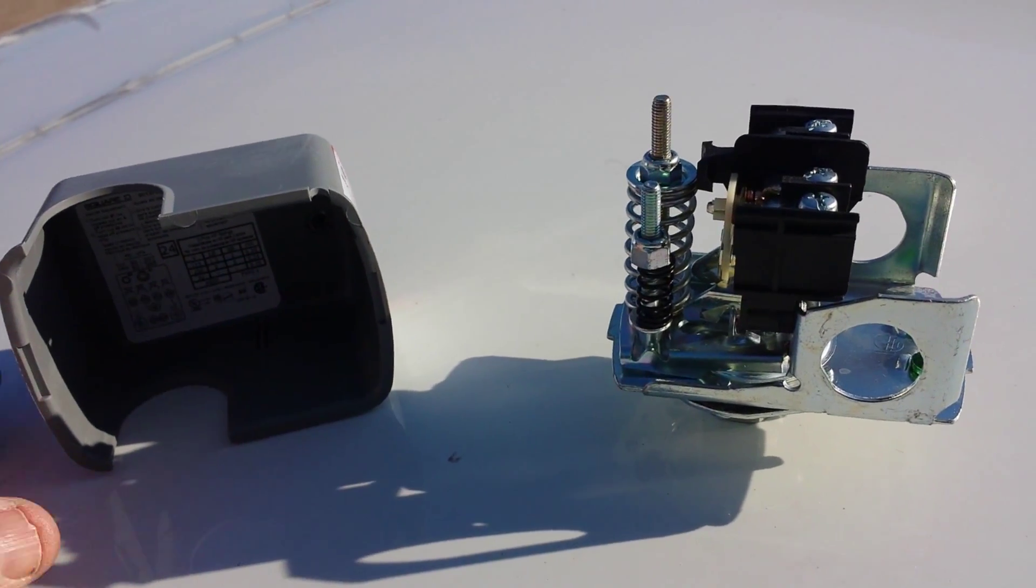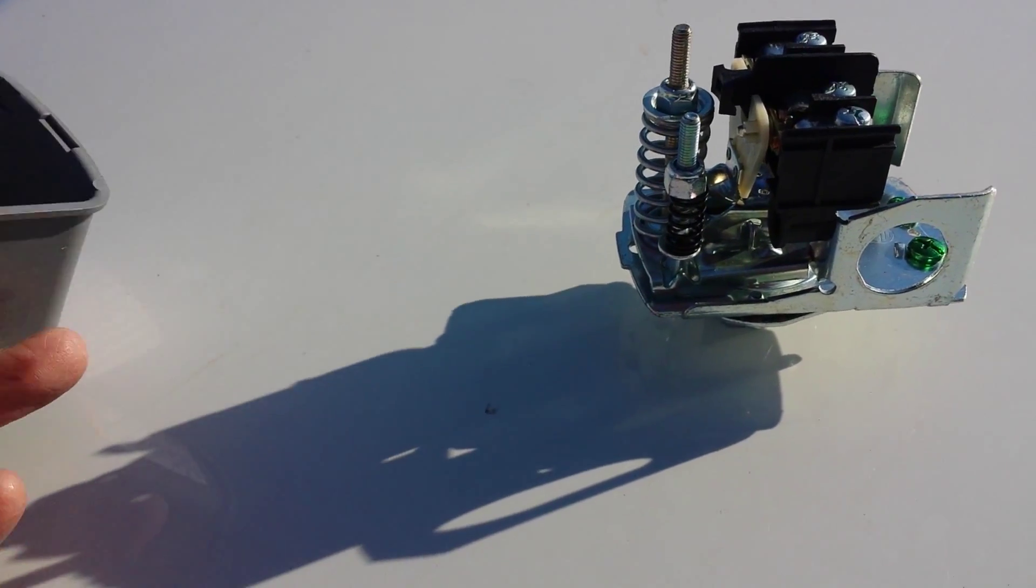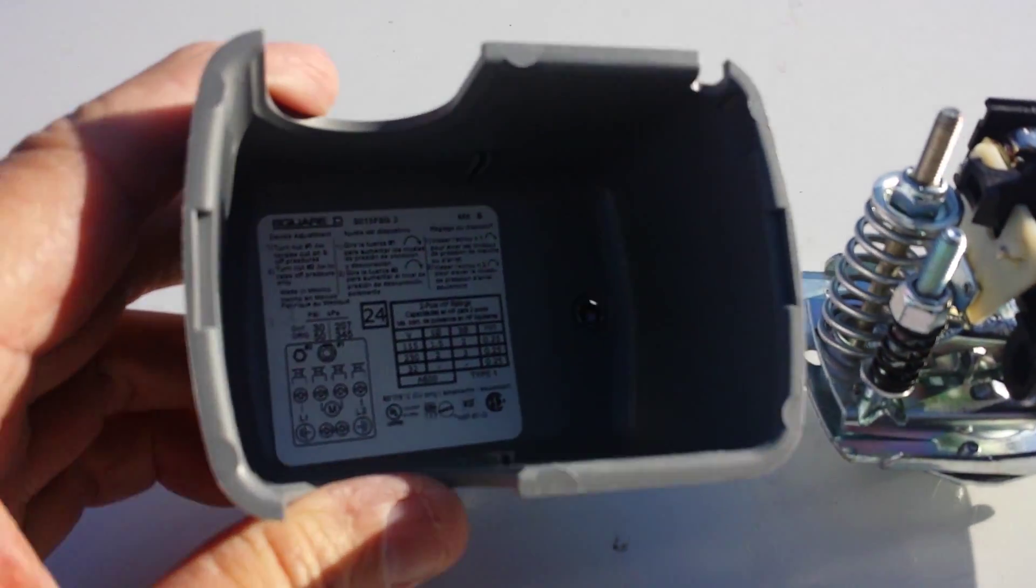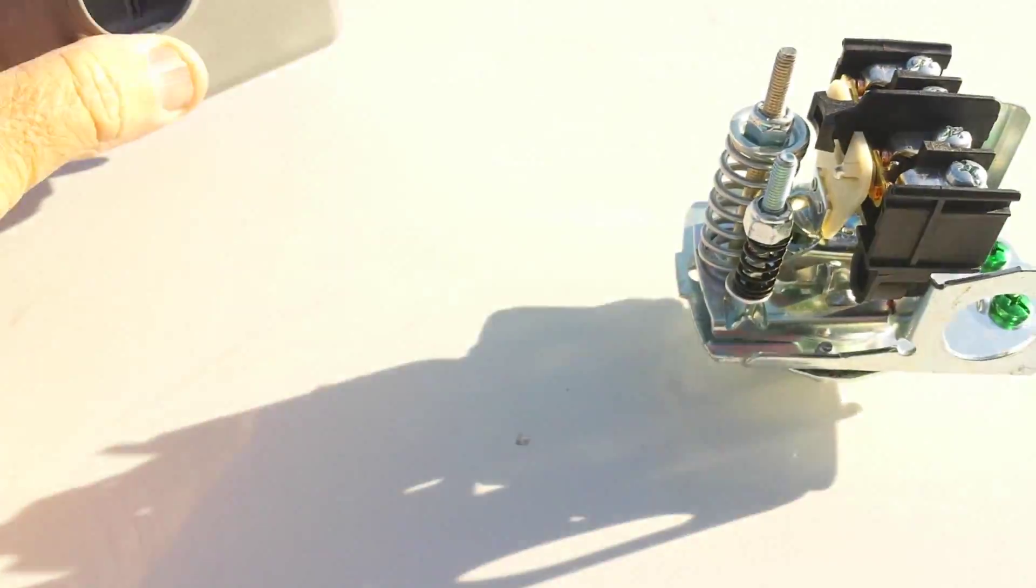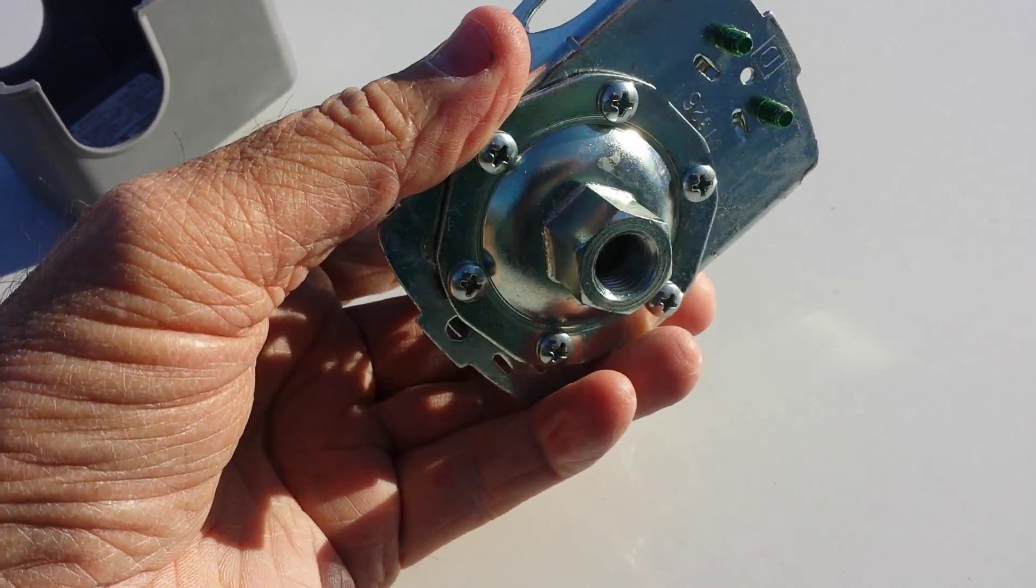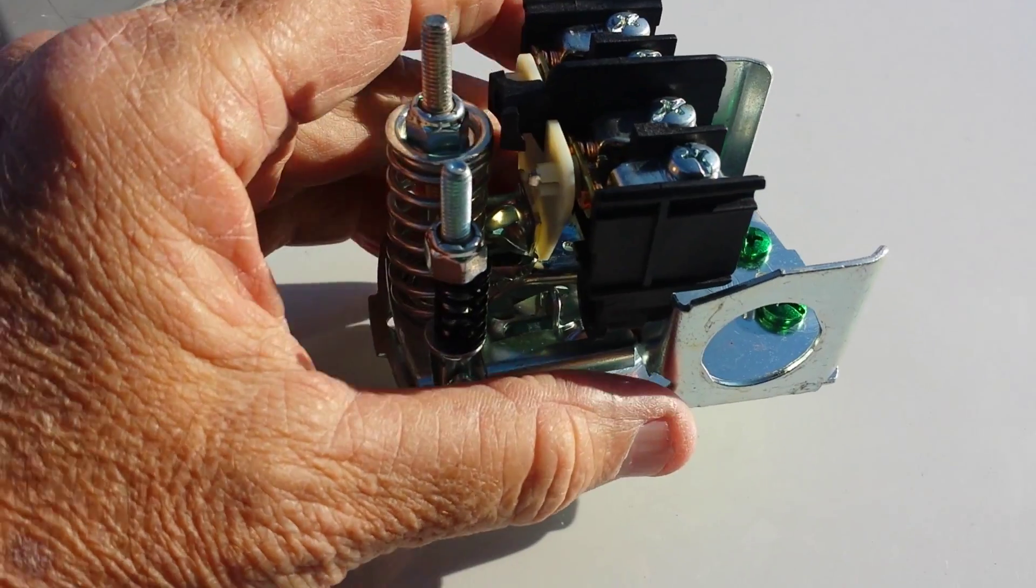Okay, everything you ever needed to know about your pressure control switch. This is a Square D brand 30/50 switch. You take the lid off and look inside the lid, and you'll see right here that it says on at 30 pounds, off at 50 pounds. What that means is the points open when there's enough pressure on the diaphragm to open the points—it will pop them open